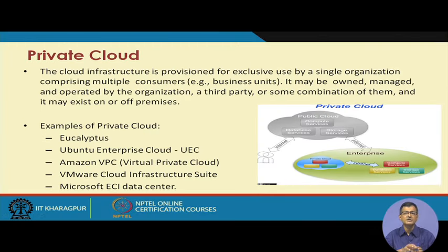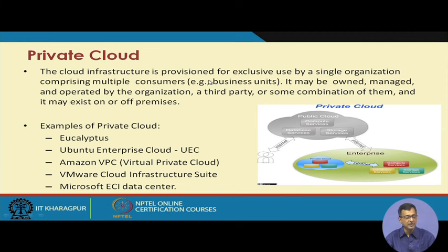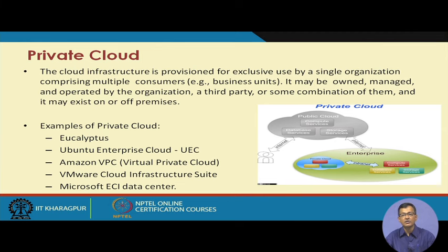The other aspect, contrary to public, is the private cloud — you have your own cloud and all your own resources working on it. The cloud infrastructure is provisioned for the exclusive use of a single organization comprising multiple consumers or business units. For example, an IIT KGP private cloud may cater to all departments and sections within the institution. It may be owned, managed, and operated by the organization or outsourced to a third party, but it remains in your premises under your jurisdiction and network control. It may exist on or off premises.